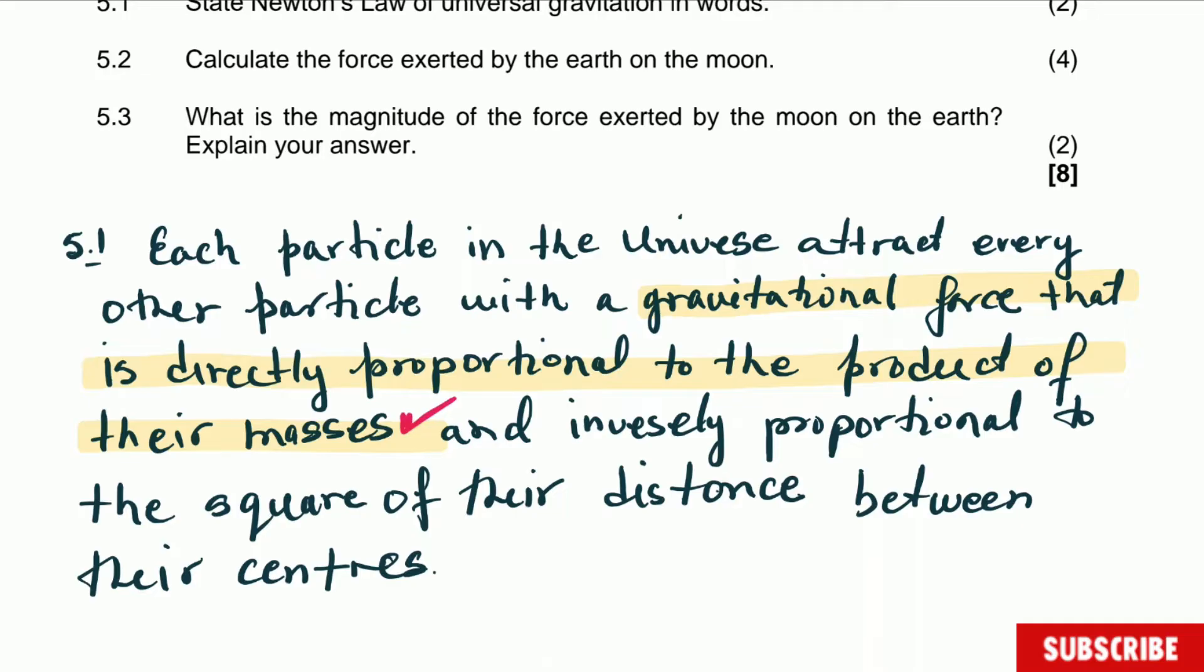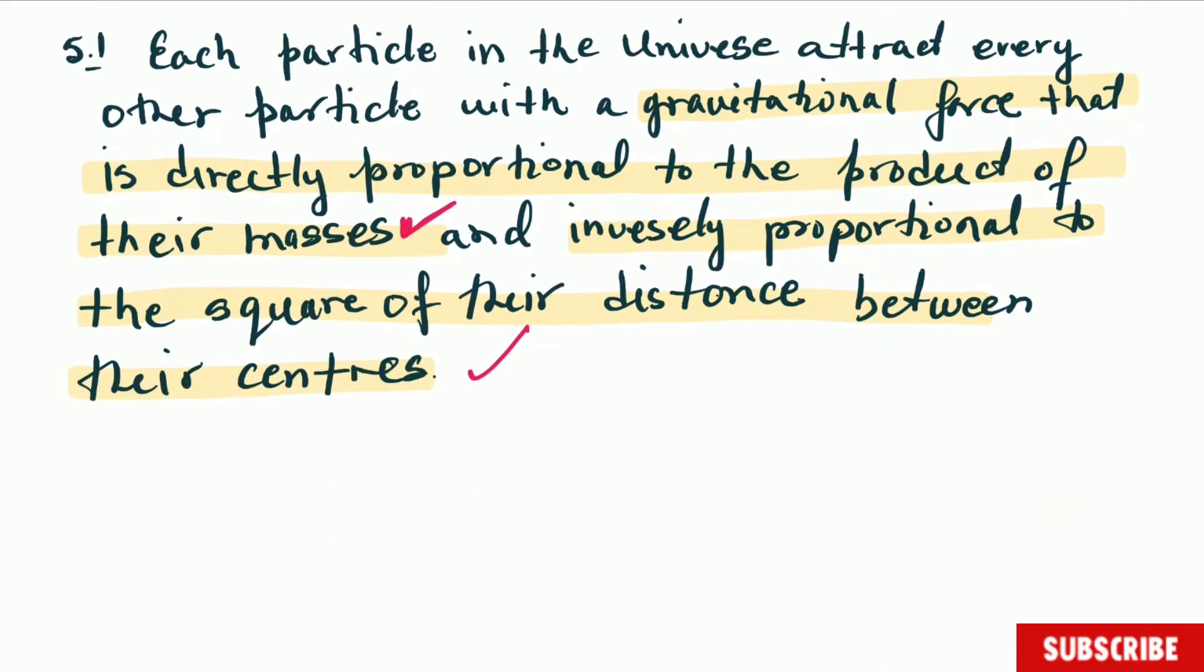And then it's inversely proportional to the square of the distance between the centers. And that is the second mark there. Inversely proportional to the distance squared. That is the law. It's quite simple and is two marks for that law.